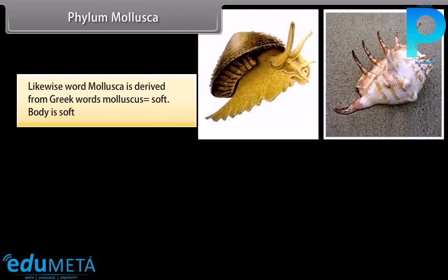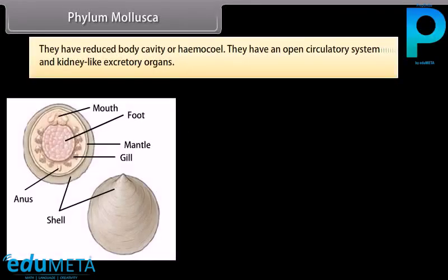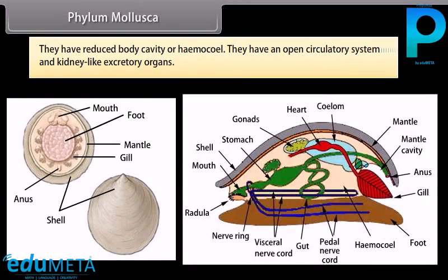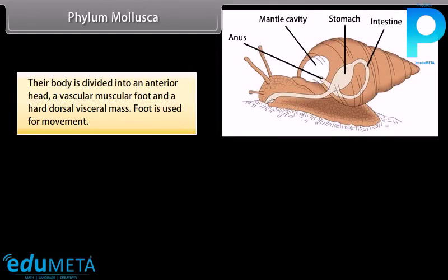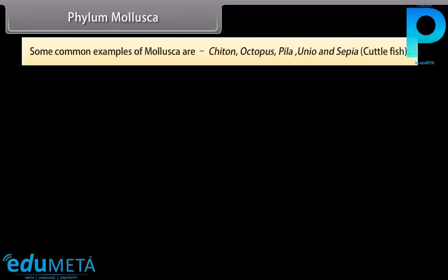Phylum Mollusca: the word Mollusca is derived from Greek word molluscus, meaning soft body. The animals of Phylum Mollusca are bilaterally symmetrical with little segmentation and without appendages. The size ranges from microscopic to giant, e.g. octopus. They have a reduced body cavity or haemocoel and an open circulatory system with kidney-like excretory organs. Their body is divided into an anterior head, a vascular muscular foot, and a hard dorsal visceral mass. The foot is used for movement.